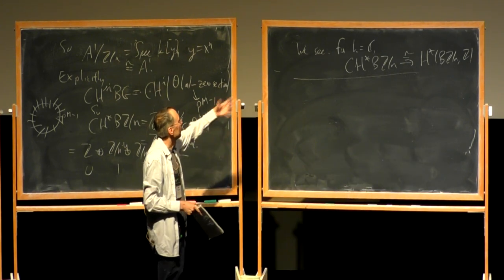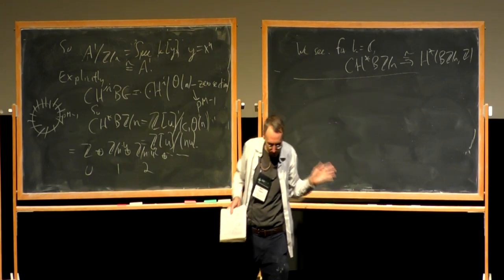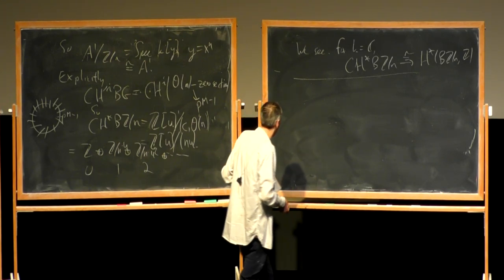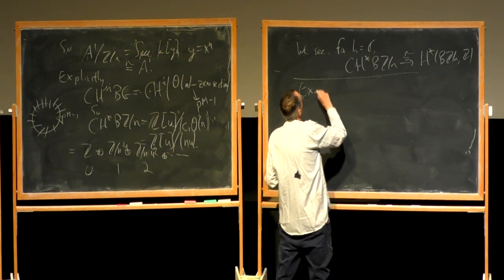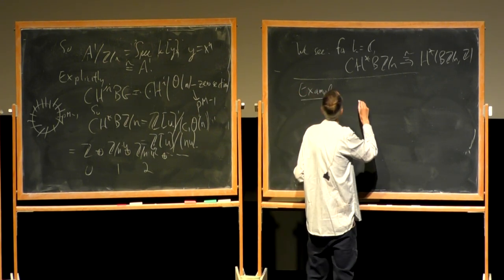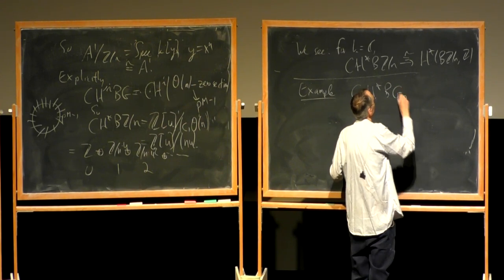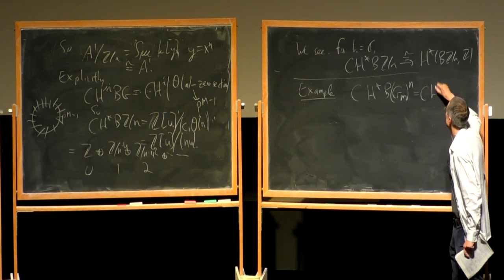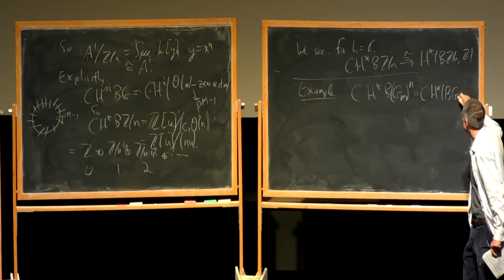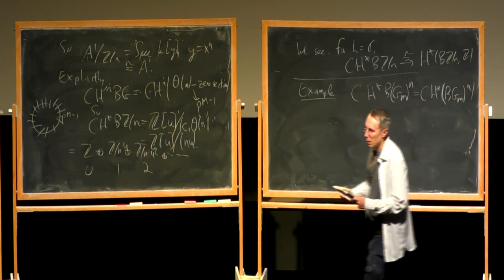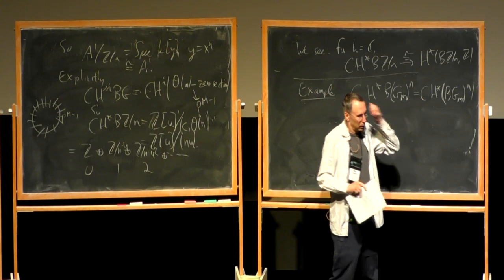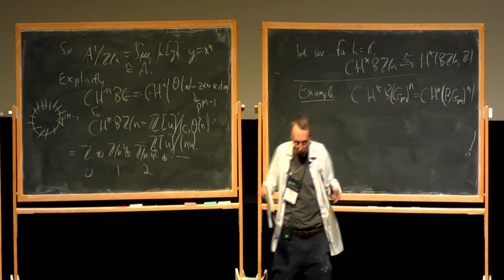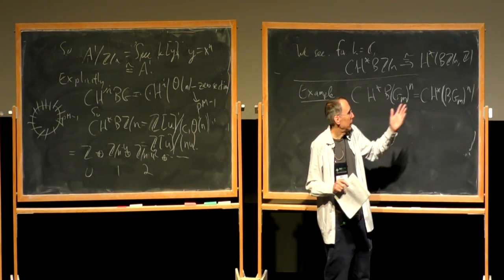This is what happens in simple examples: for GL_N I also mentioned that the Chow ring is the same as the cohomology of the classifying space. But that's not always true. Another case where things are as in topology is the product of N copies of the multiplicative group. The classifying space of a product of groups corresponds to taking the product of classifying spaces, so this is like the Chow ring of P^∞ × P^∞ × ... (n times), or in finite-dimensional terms the Chow ring of P^m × P^m.